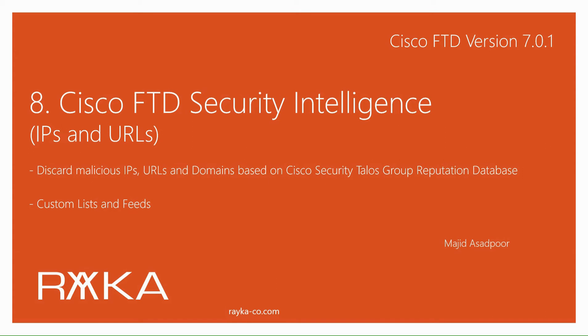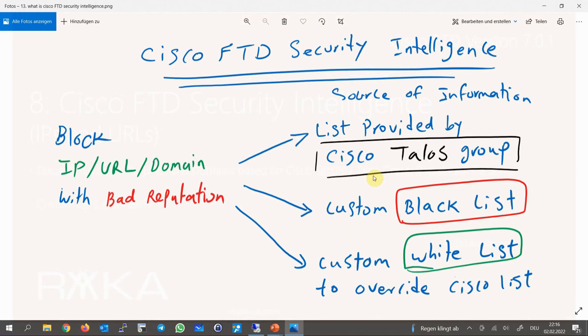In this section, we will talk about Security Intelligence to block IP addresses and URLs with bad reputation. Blocking malicious domains will be discussed in the next video since the process is somehow different. The main task of Security Intelligence is to protect you from malicious content on the internet without doing a deep traffic inspection, and just based on their reputation collected by Cisco Talos Security Group.